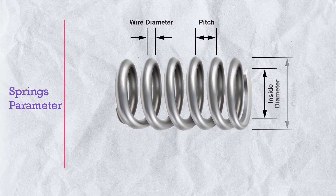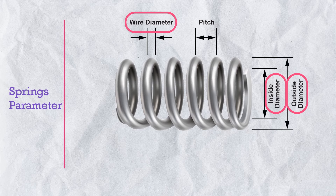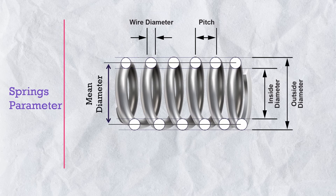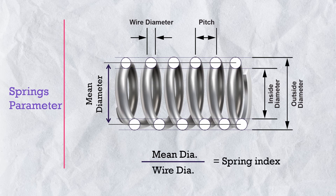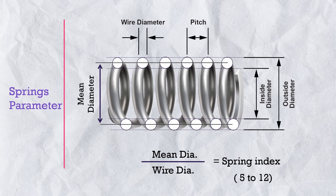Other parameters of the spring include internal diameter, outer diameter, wire diameter, and pitch of the coil — which are the same as their names suggest — and the mean diameter of the spring. The ratio of the mean diameter to the wire diameter is called the spring index, and its value should be in the range of 5 to 12, otherwise spring forming will be difficult. Also, the coil pitch angle should be less than 12 degrees, otherwise undesirable compressive stress would be developed in the spring coil. These are good-to-know knowledge points.